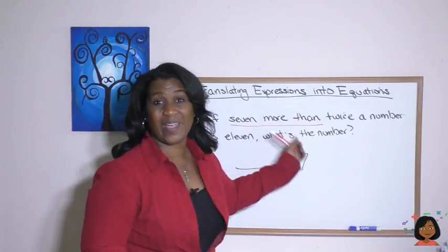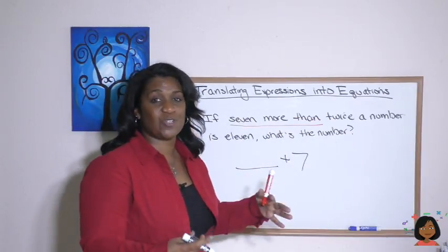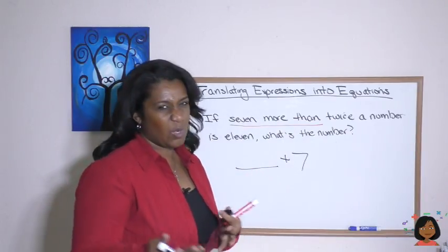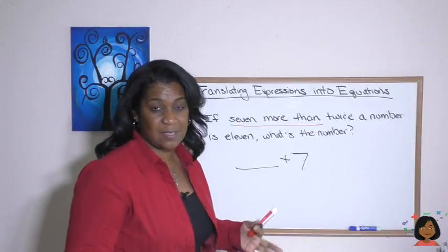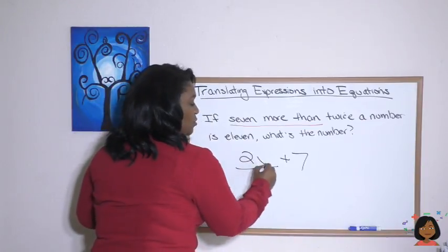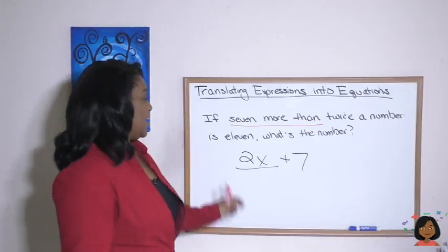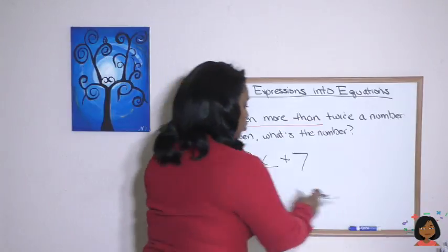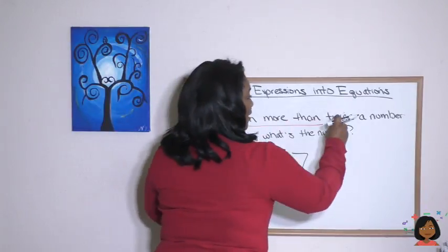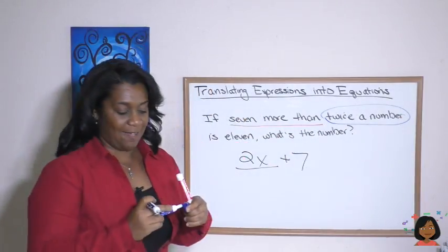It's more than twice a number. So that's what we're adding it to. Twice a number, we don't know what the number is. We're going to call that X, but we want twice X, which is going to be two X. Is. Twice a number. And let's do is 11.